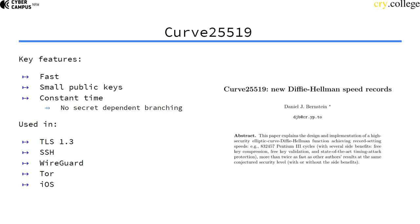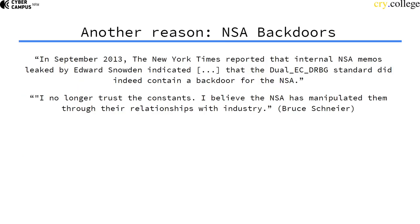Curve 25519 became quite popular very fast. Nowadays it's used in TLS 1.3, SSH, WireGuard, Tor, and Apple uses it in most of their iOS crypto applications. So it's quite popular.